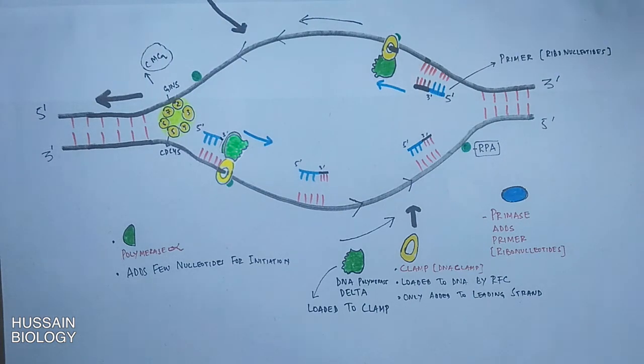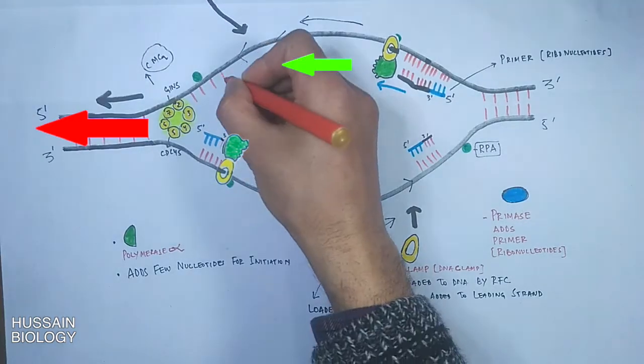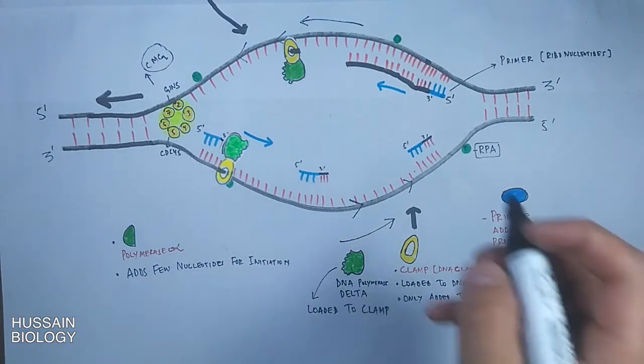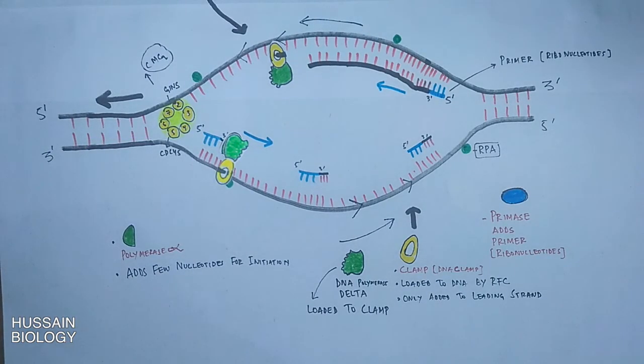On the upper strand you can see the helicase running towards the left. So the polymerase will run towards it adding deoxynucleotides on the 3 prime end. The polymerase delta will continuously make this strand, so called the leading strand.